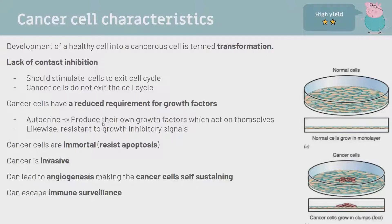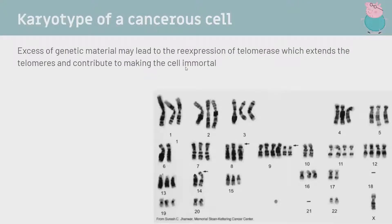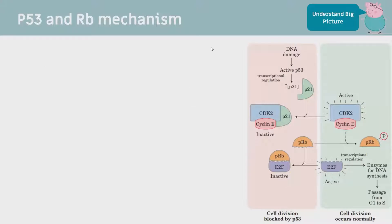Mutations can lead to the elongation of telomeres, which makes cells immortal. Cancer cells are invasive - they start growing in clumps. They can lead to angiogenesis, the development of blood vessels, so they can be self-sustaining, bring nutrients to themselves, and escape immune surveillance. This is a karyotype of cancer cells - you can see how a variety of mutations have led to overproduction and acceleration through the cell cycle, and it looks like a mess. This is from breast cancer, and you might get a karyotype like this on the exam.